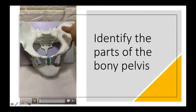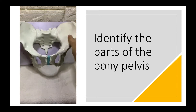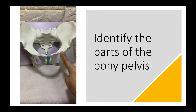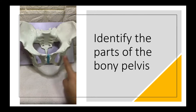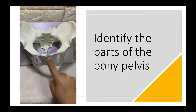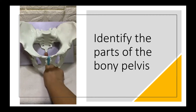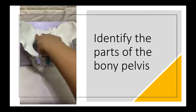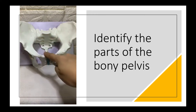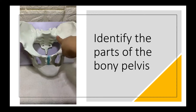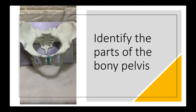So we have the ilium, the pubis, the ischium, the symphysis pubis, the sacral promontory, sacrum, and the coccyx. And this is the linea terminalis. The area above the linea terminalis is what we call the false pelvis, and the area beneath the linea terminalis is called the true pelvis.